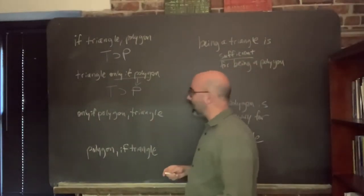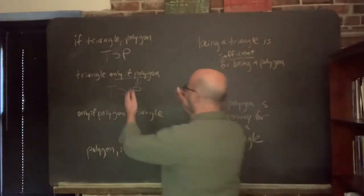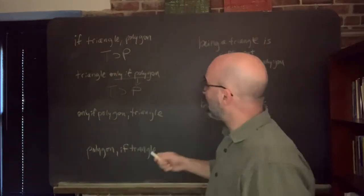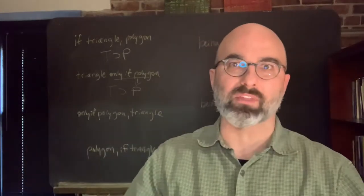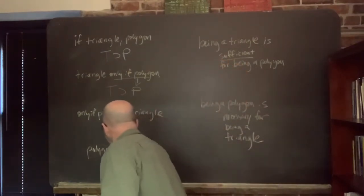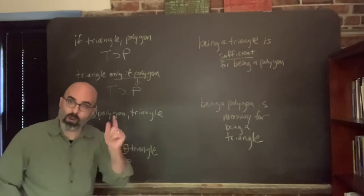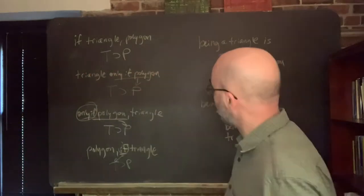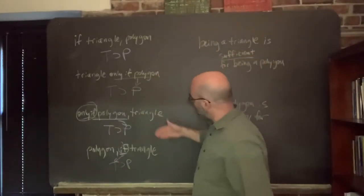How about 'only if polygon, then triangle'? Those are the same words, just mixed up — is it the same proposition? Just like it doesn't matter where the 'if' claim comes in the sentence — 'polygon if triangle' is the same thing — 'if' claims go in the antecedent regardless of where they appear. The same goes with 'only if': an 'only if' claim always goes in the consequent. So we get T horseshoe P. Look at all the ways you can say T horseshoe P — same proposition, four different sentences.